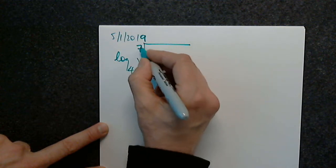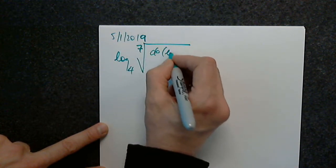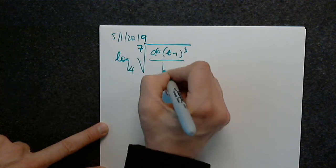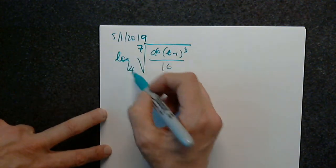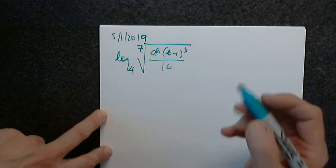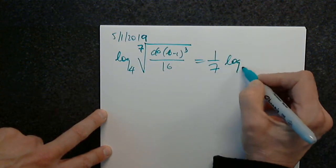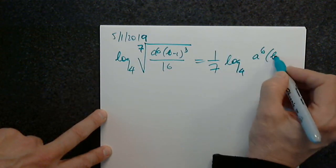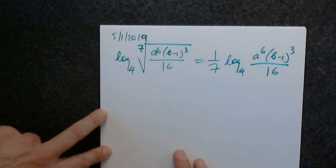We have the 7th root of a to the 6th, b minus 1 to the 3rd over 16. We have to start with the 7th root, which means 1 over 7, which goes in front. So this becomes 1 over 7 times log base 4 of a to the 6th, b minus 1 to the 3rd over 16.